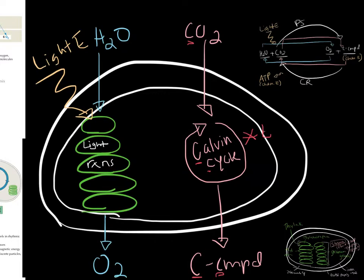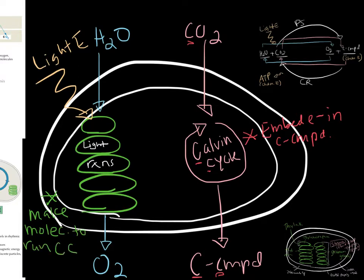The function of the Calvin cycle is to embed electrons in a carbon compound. That makes it highly energetic, meaning it can be broken down later to release energy. The purpose of the light reactions is to make molecules to run the Calvin cycle using light energy.